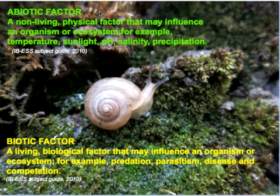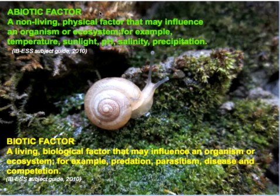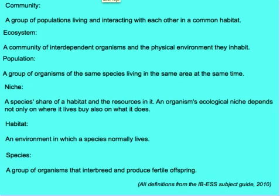Within the ecosystem, there are lots of non-living components or abiotic factors that impact the living components. For instance, our snail right here is affected by temperature, sunlight, and moisture. It is also affected by other snails, by predators, by parasites or diseases, and by competition with other organisms feeding on similar things in the habitat.